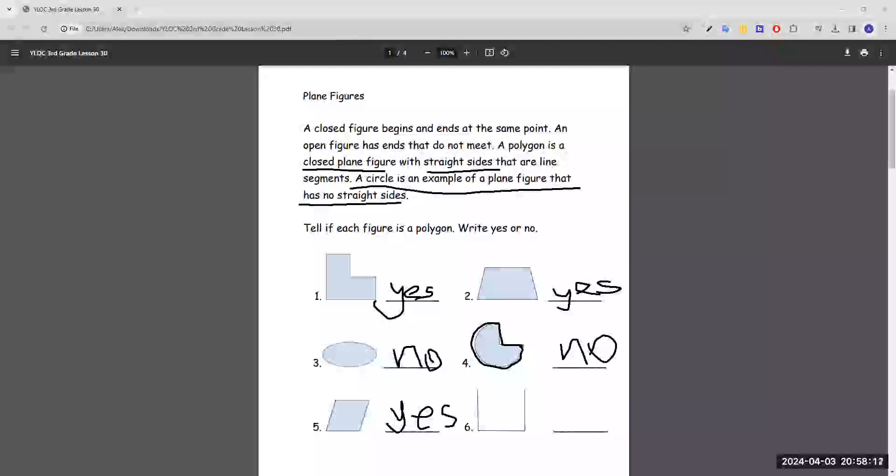Now number six, this one we can see that there's a side missing on top, and that means that it's not closed, so it's not a polygon.